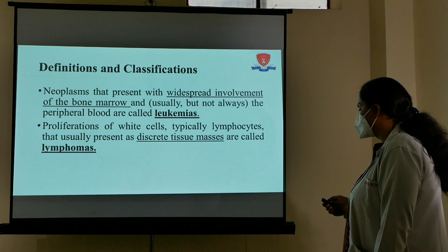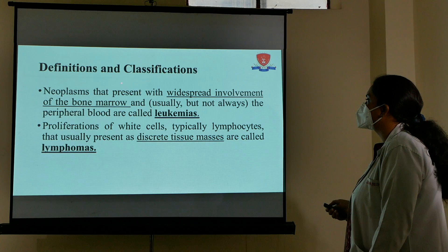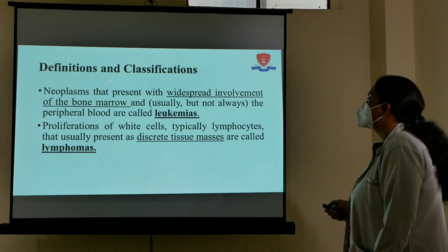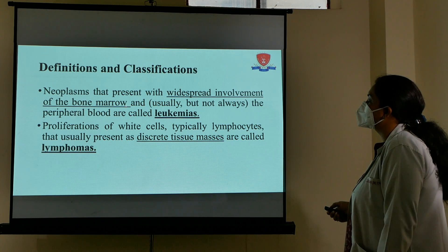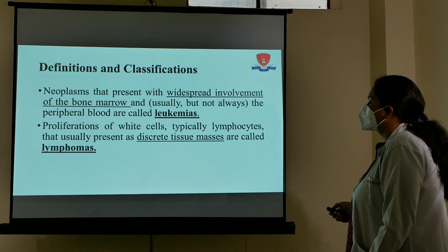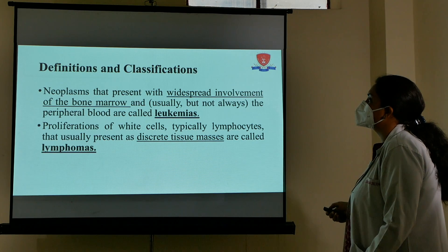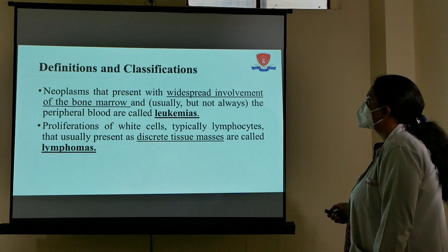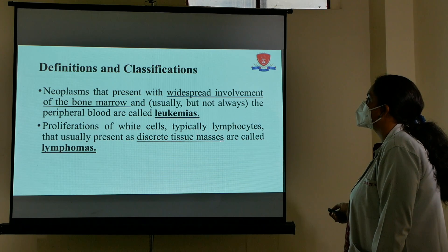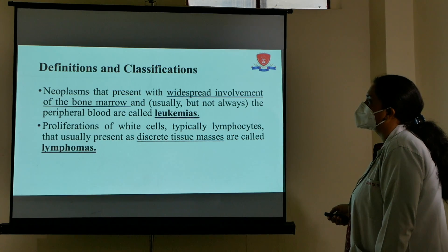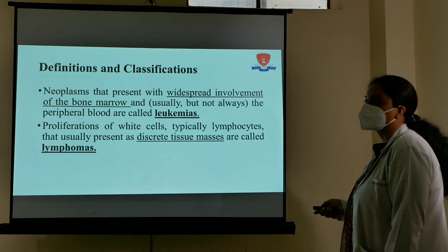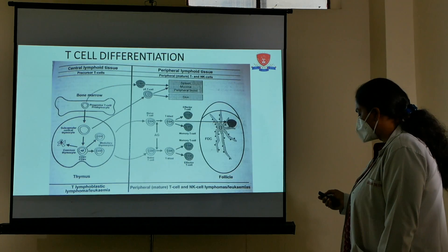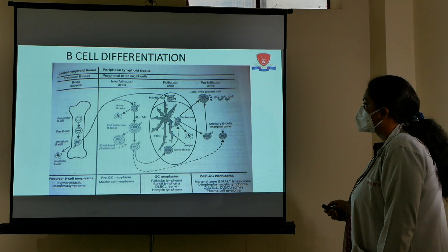What is the difference between leukemia and lymphoma? Leukemias are neoplasms that present with widespread involvement of the bone marrow and blood — when cells are present in the blood and bone marrow, they are called leukemias. When there is proliferation of these cells, typically lymphocytes, in discrete tissue masses — and the blood and bone marrow are not involved — then it is called a lymphoma.